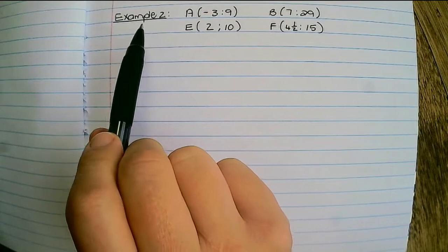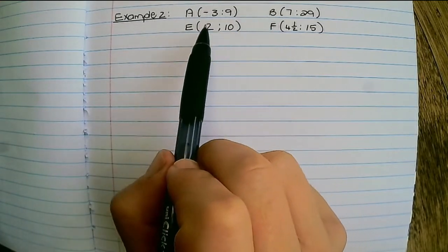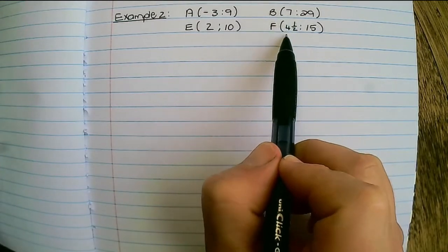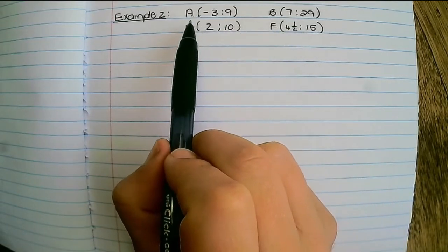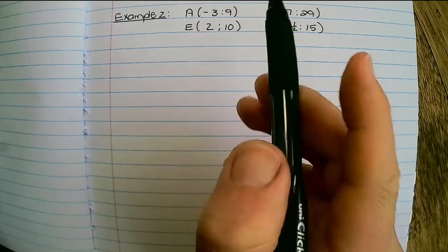So let's look at our next example. Here we have the points A, B, E and F. And now we have 4 and a half as our x coordinate for F. But let's compare the gradient of AB with the gradient of EF.